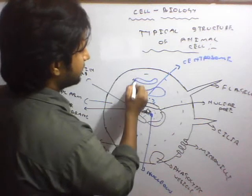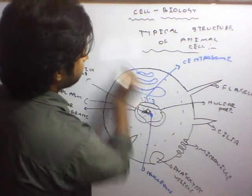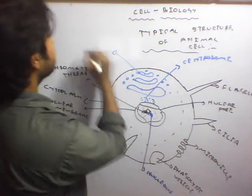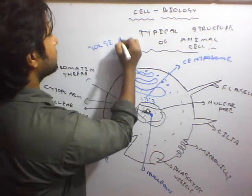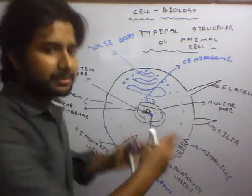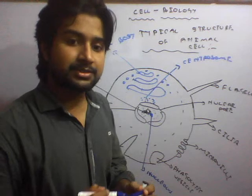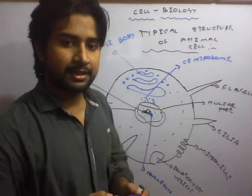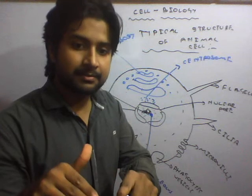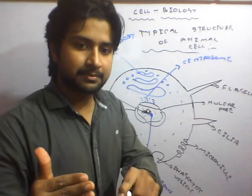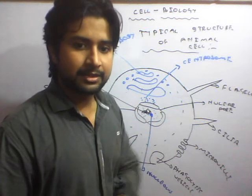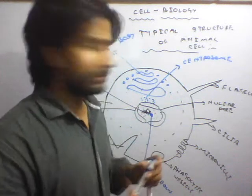Here we have the Golgi body along with vacuoles. The Golgi body gets modified to form different structures — one very important structure is the acrosome, which is present at the head of the sperm and helps to penetrate the outer membrane of the ovum for the entry of sperm inside the ovum. I will discuss the Golgi body in more detail in my next video.